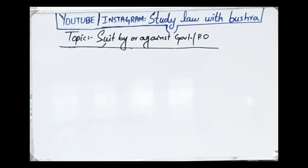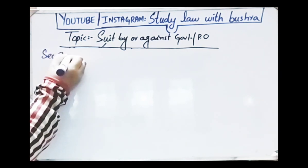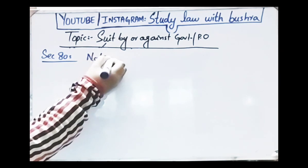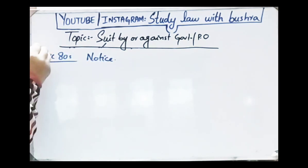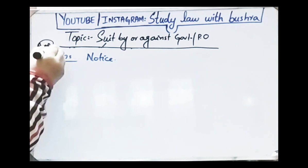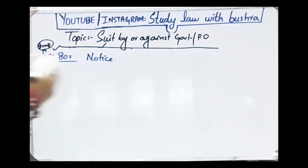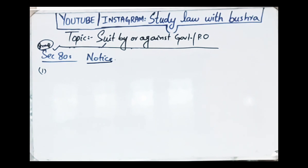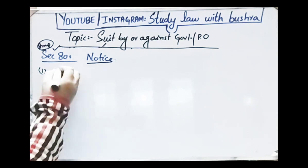After that, we move to section 80. Section 80 deals with notice. When is this notice given? To whom is it given? Why is it given? This is a very important section, so listen carefully. Starting with clause 1: a suit may be instituted against the government or against the public officer in respect of any act purporting to be done by such public officer in his official capacity, after the expiration of two months next after the notice in writing has been delivered to or left at the office.